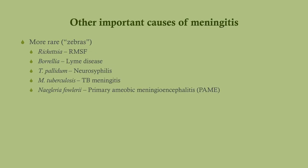Other important causes of meningitis include Rickettsia causing Rocky Mountain Spotted Fever, Borrelia burgdorferi causing Lyme disease, Treponema pallidum causing neurosyphilis, Mycobacterium tuberculosis causing TB meningitis, and Naegleria fowleri causing primary amoebic meningoencephalitis. You should understand the presentation for each of these, as meningitis is just one way they can present — most of them probably present in other ways more commonly.